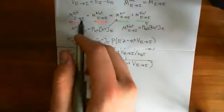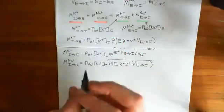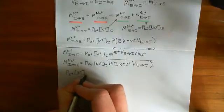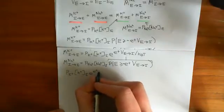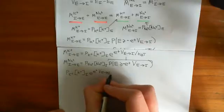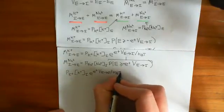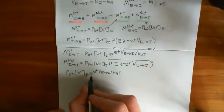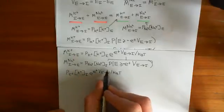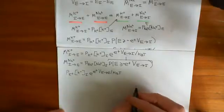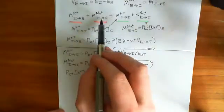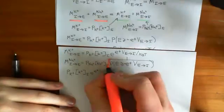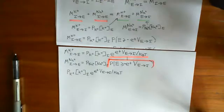Now let's plug these two things back in. If we plug in the movement of potassium from intracellular to extracellular, that equals the permeability of potassium times the potassium concentration in the intracellular compartment, times the exponential raised to the power of the charge on the proton times the voltage from extracellular to intracellular divided by the Boltzmann constant times the temperature. This is the fraction of potassium ions that will have energy great enough to cross the membrane at that electrical potential difference. We'll replace the probability that the energy is greater than or equal to that threshold with this exponential function.